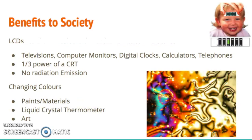Some of the benefits to society are that LCDs have no radiation emission. They are better with light conditions because they have anti-glare technology, and the TVs are not affected by increasing or decreasing air pressure. Compared to plasmas, they have better performance on smaller screens, require less power, generate less heat, and have a longer lifespan.